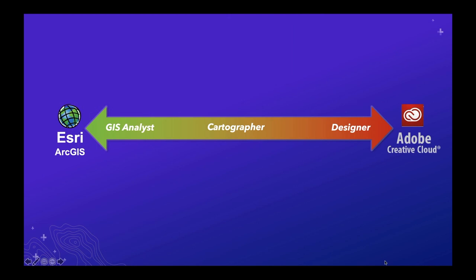A little bit of background about Maps for Creative Cloud: it's a free extension for Illustrator and Photoshop that lets you bring down spatial data from ArcGIS Online into Illustrator as editable vector artwork and into Photoshop as editable raster layers. This graphic illustrates the wide range of use cases the Maps for Creative Cloud extension can support — from GIS analysts spending most of their time in Esri desktop GIS software to designers who spend most of their time in Creative Cloud applications.